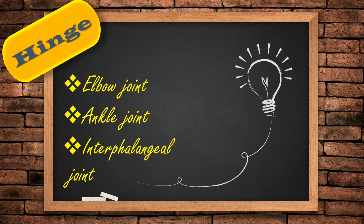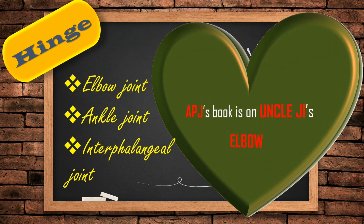Please pay attention to the stories because this is a frequently asked MCQ. First one: hinge joint. Elbow joint, ankle, and interphalangeal joints are the joints which come under the type of hinge joint. The story to remember is: APJ's book is on uncle G's elbow. Here APJ mentions IPJ which means interphalangeal joint. Uncle means ankle, G mentions hinge, and elbow is the elbow joint.